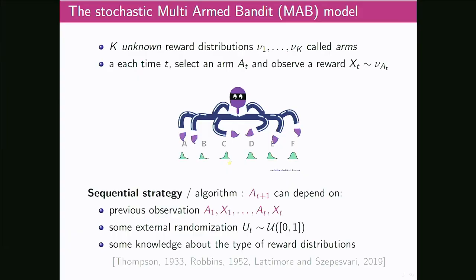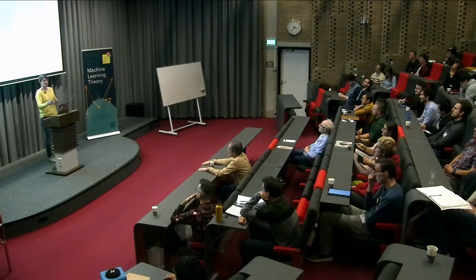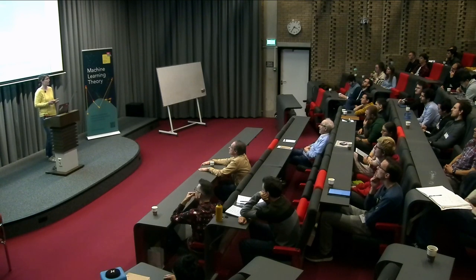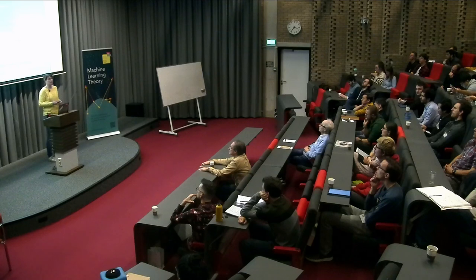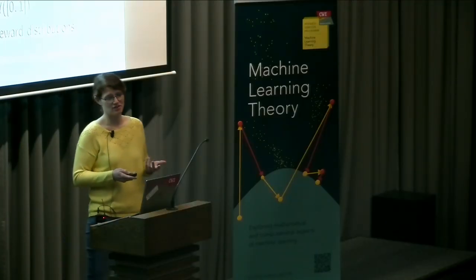To have a good algorithm it is often useful to know what type of reward distribution you are facing. For those who've never heard about bandits: the name comes from an old slang for a slot machine. Bandits were introduced in the statistics community a long time ago, around the 1950s with the work of Robbins — and even before with Thompson Sampling — then picked up by the machine learning community in the 2000s with many new contributions.